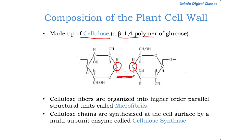A glycosidic linkage essentially links two sugar molecules through the release of a water molecule. When the first carbon of one glucose links to the fourth carbon of the other glucose, one water molecule (H₂O) is released.